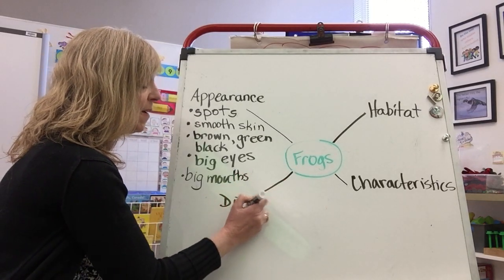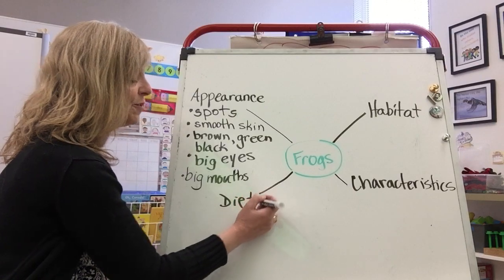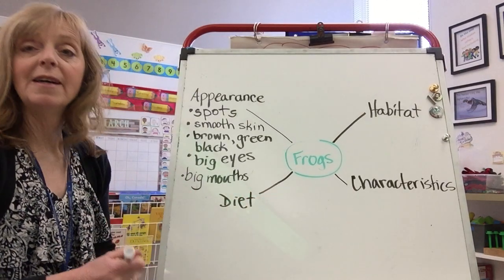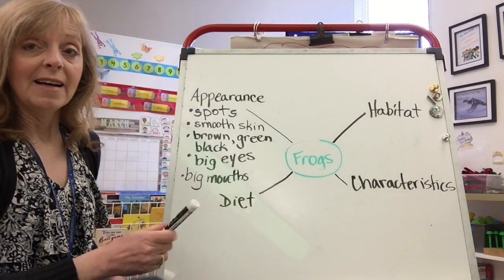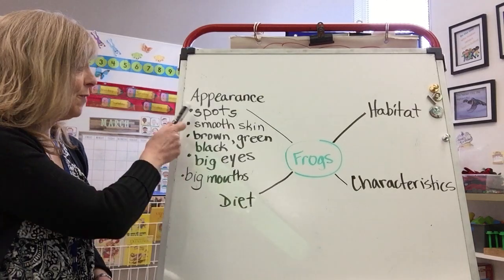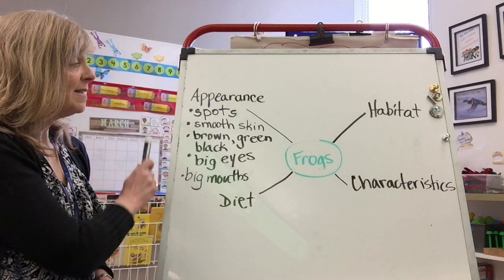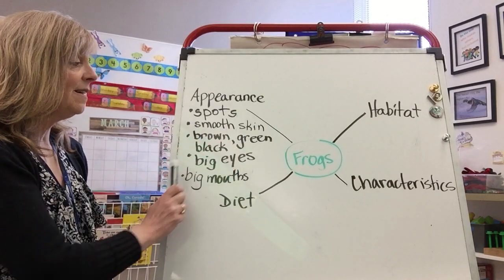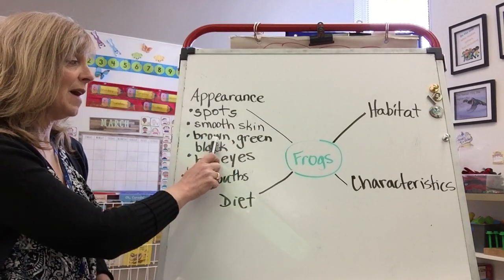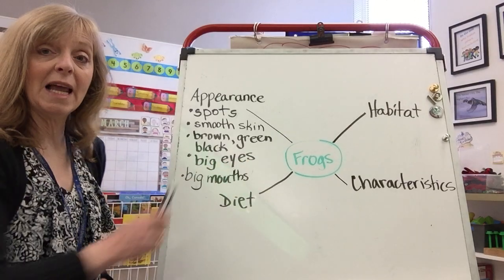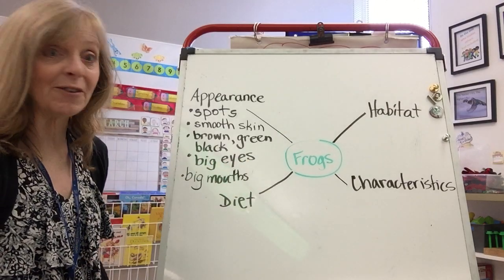So there are some characteristics that you could write about. Not all frogs, but some frogs have spots. They have smooth skin. They are brown or green or black, or some of each.